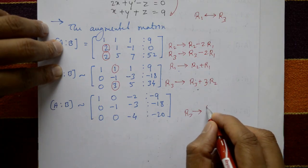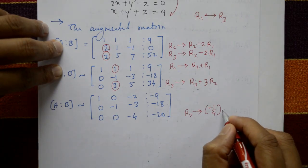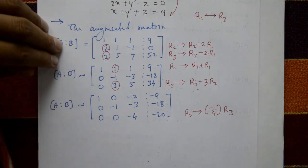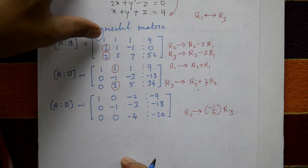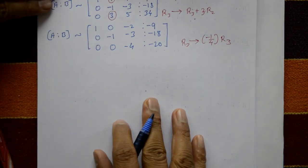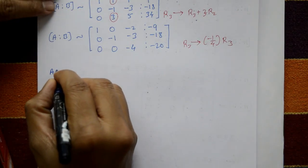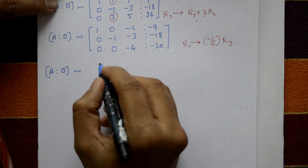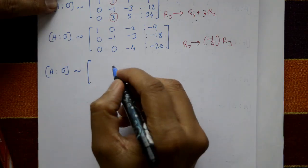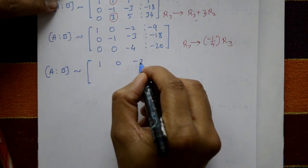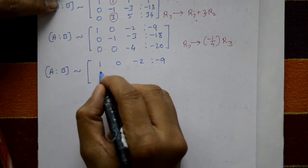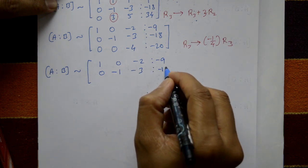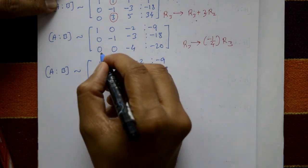Now scale the third row R3 by multiplying by -1/4. The augmented matrix is equivalent with the first and second rows unchanged. The third row becomes [0, 0, 1 | 5].